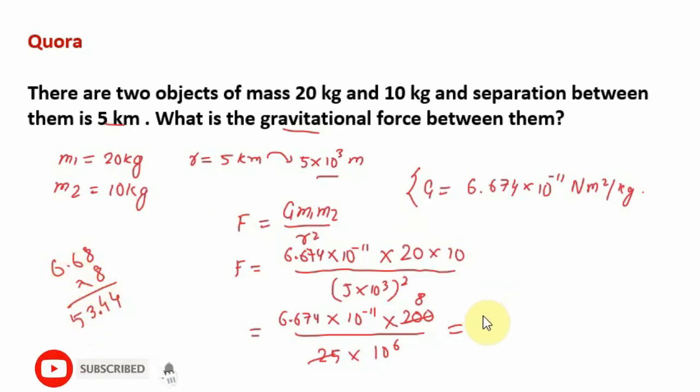The value is 53.44 × 10⁻¹¹, and this power will go up and we have to write this power in inverse. So the whole value is 53.44 × 10⁻¹⁷, and this will be your answer. Force will be 53.44 × 10⁻¹⁷ Newton. Hope you have liked the video. Subscribe for more interesting videos. Thank you.